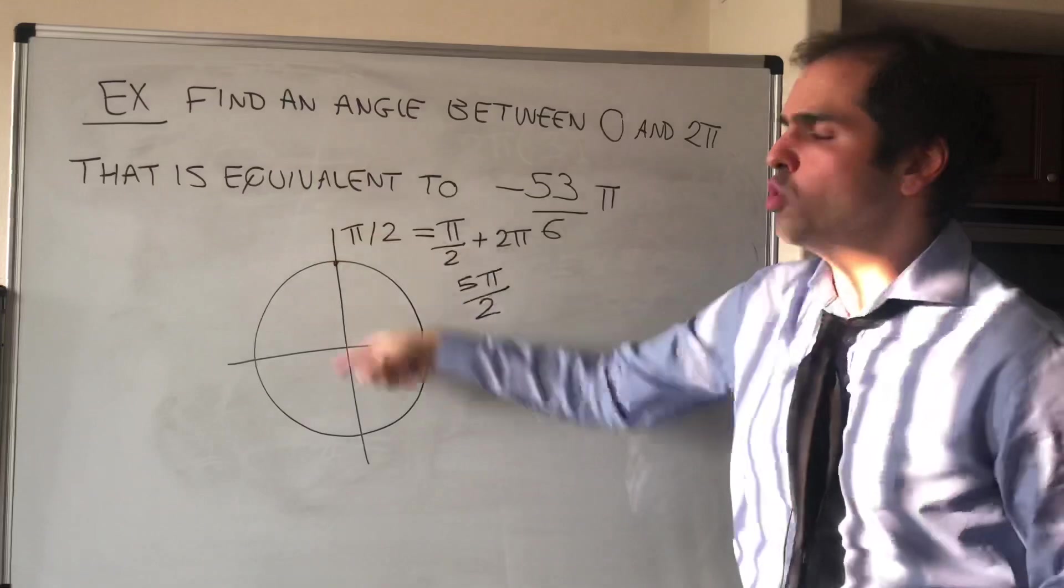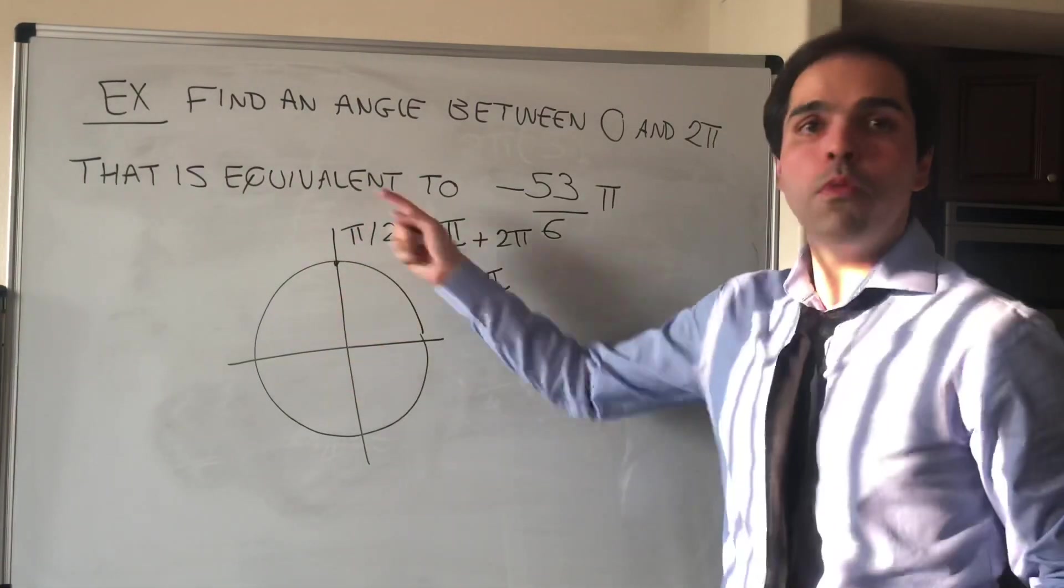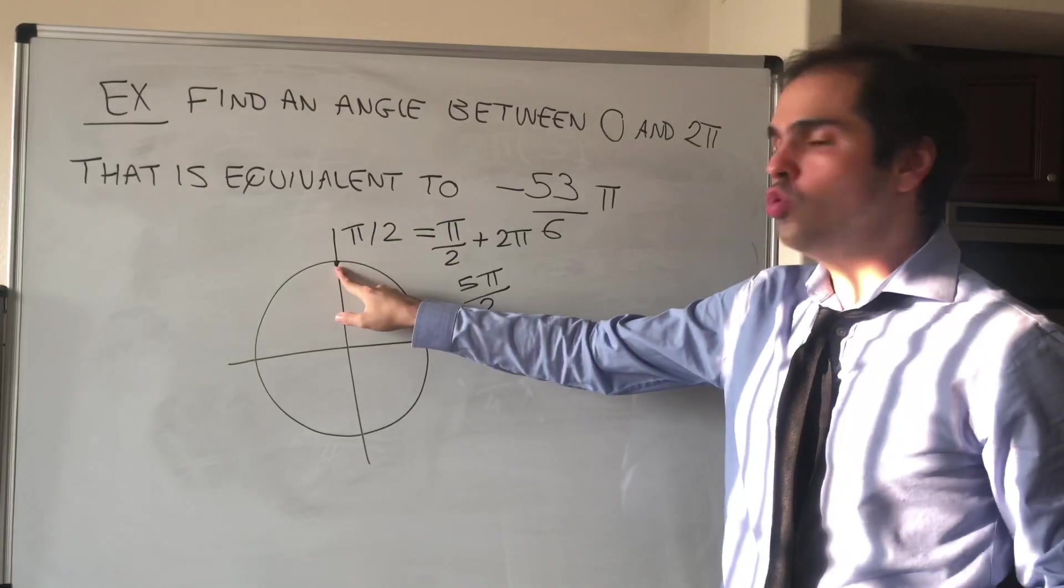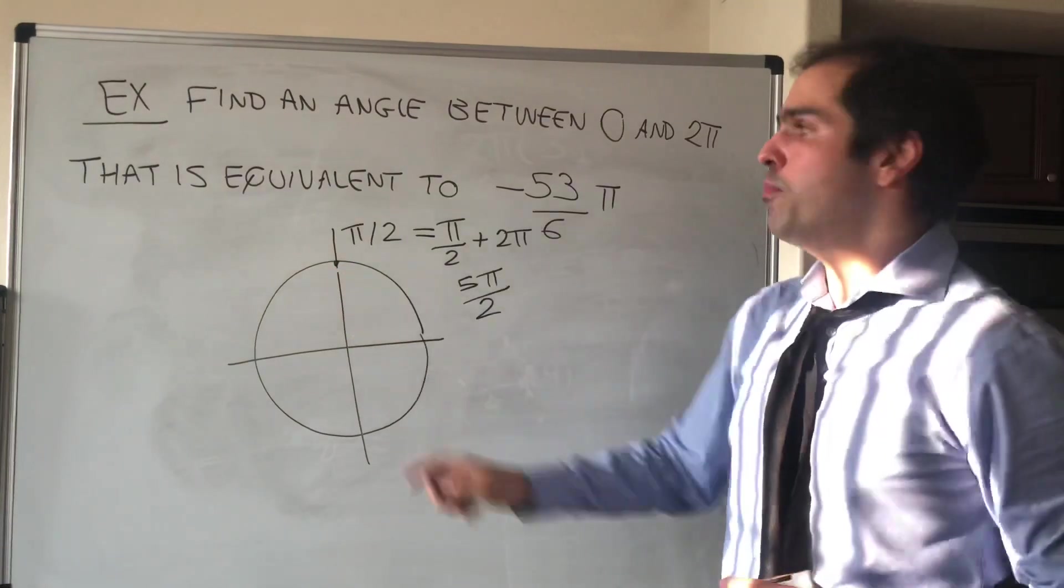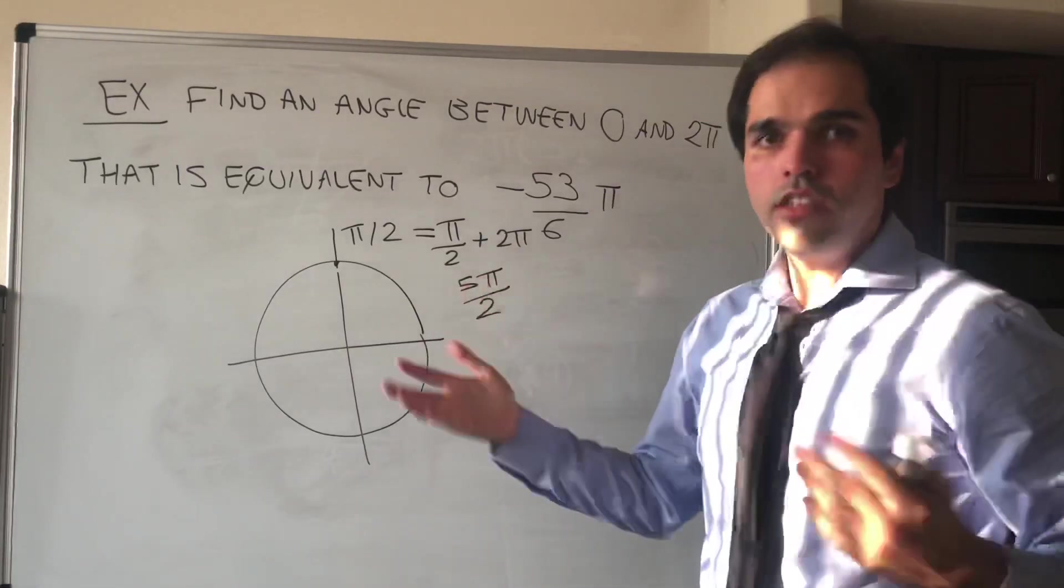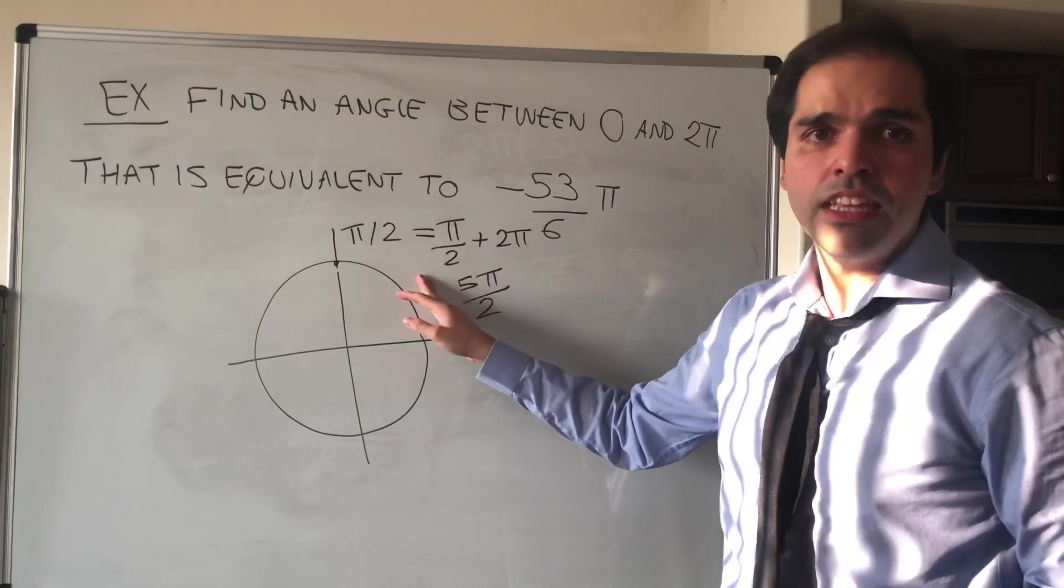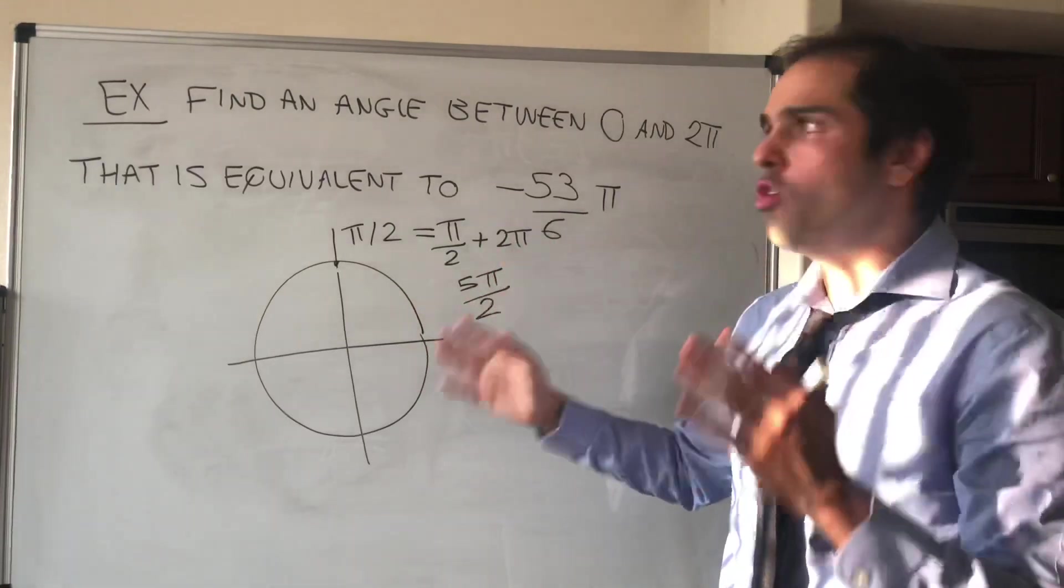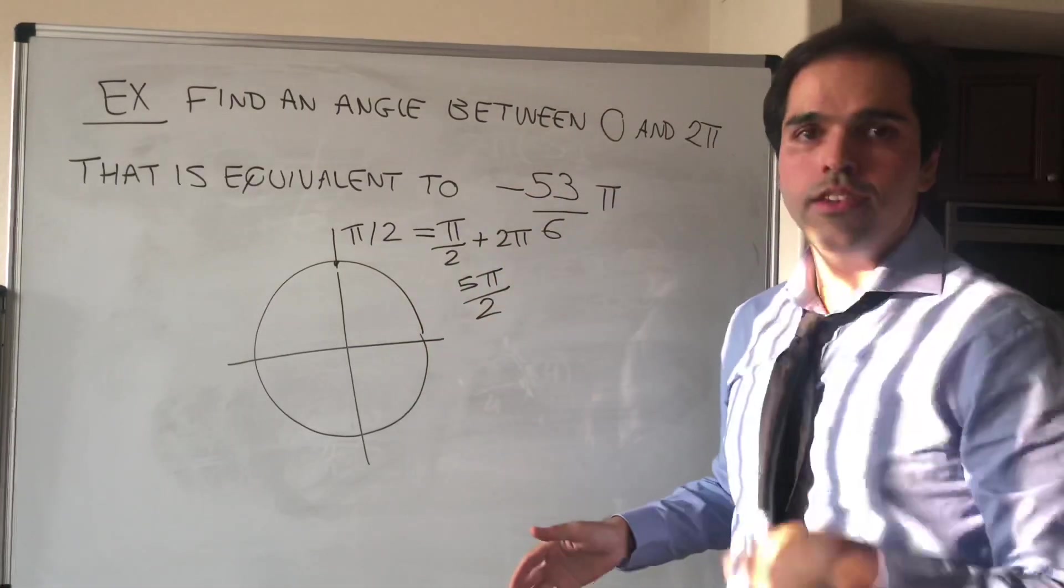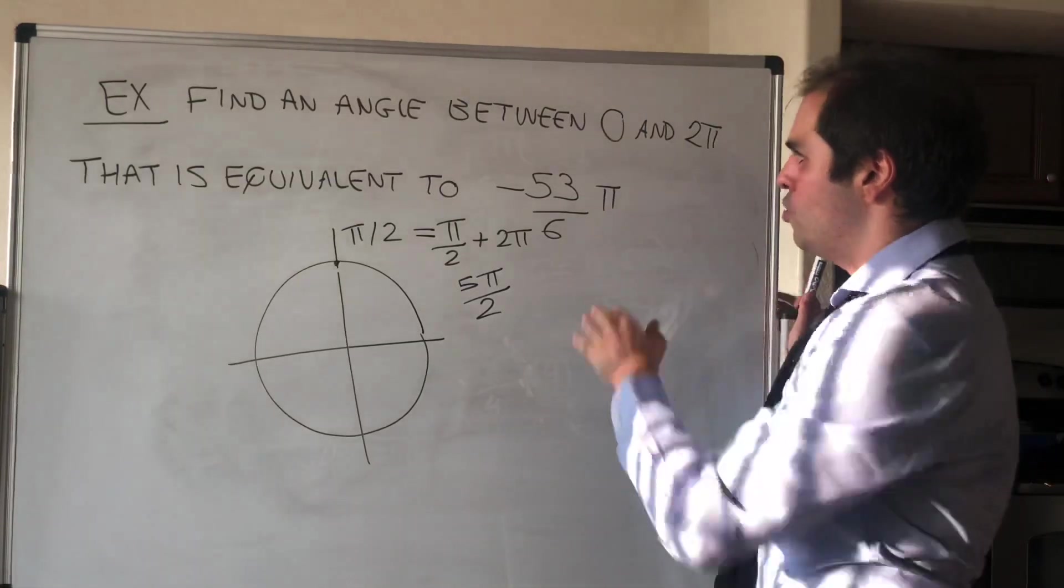Because, you see, adding or subtracting multiples of 2π just means complete revolutions. So you do end up at the same point you started with. And in particular, because of this, you can actually express any radian in terms of an angle between 0 and 2π, just by adding and subtracting multiples of 2π.